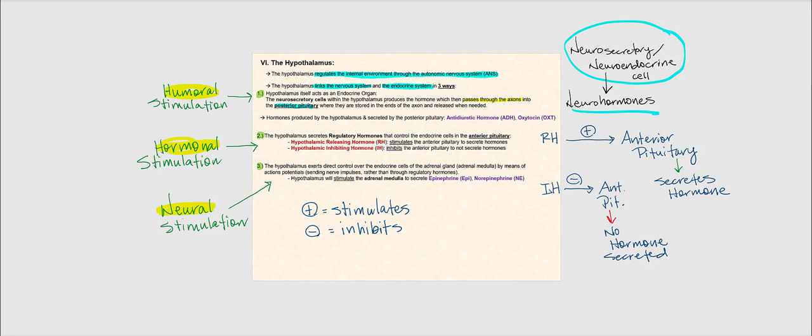Examples of neurohormones are antidiuretic hormone, ADH, and oxytocin — produced by neurosecretory cells found in the hypothalamus. Based on our discussion of the urinary system, ADH targets the kidneys, specifically the collecting duct and the late distal convoluted tubule, or DCT.